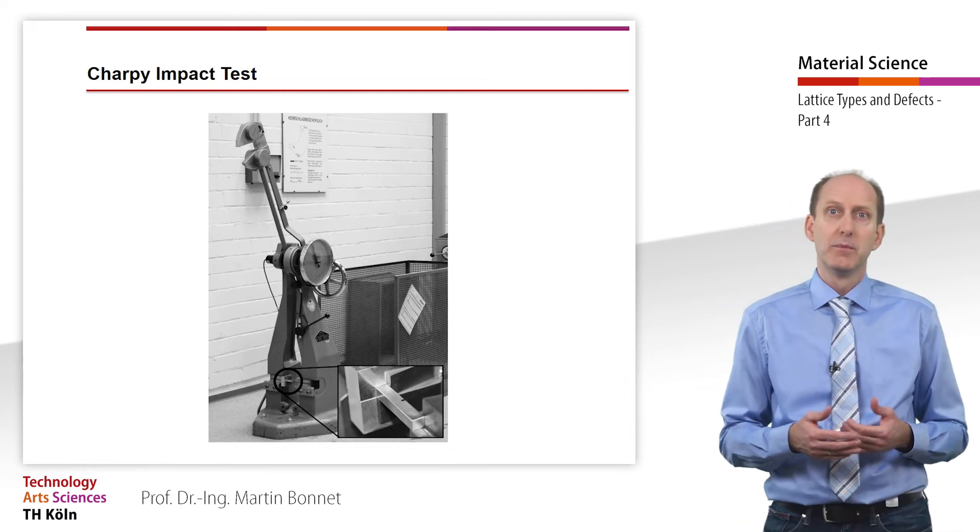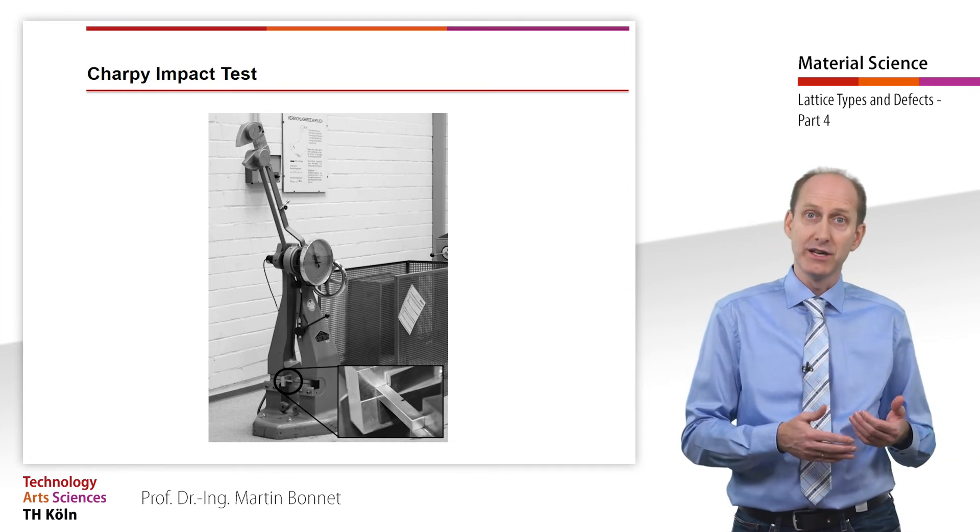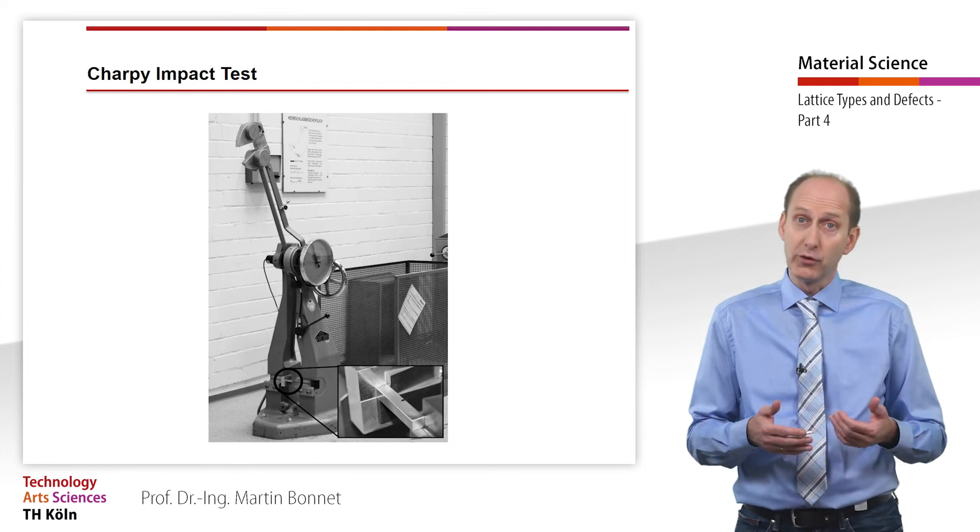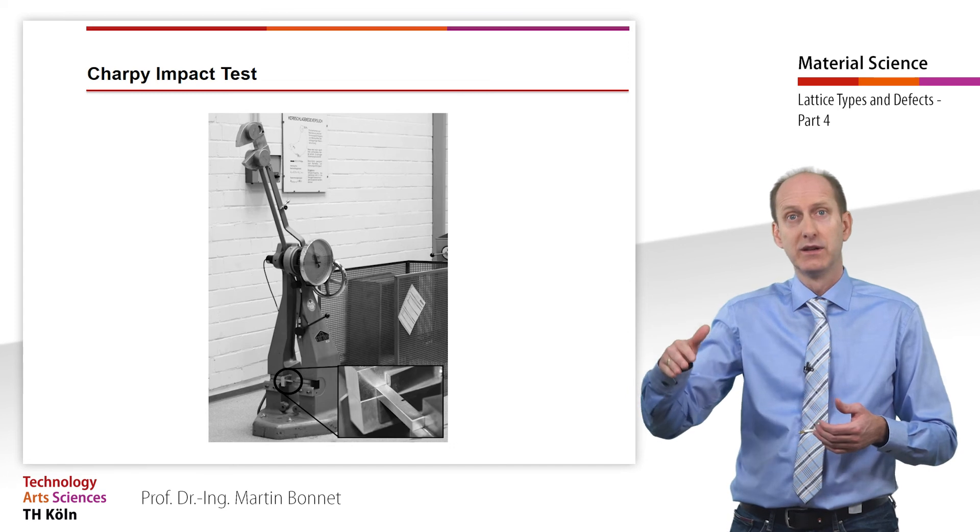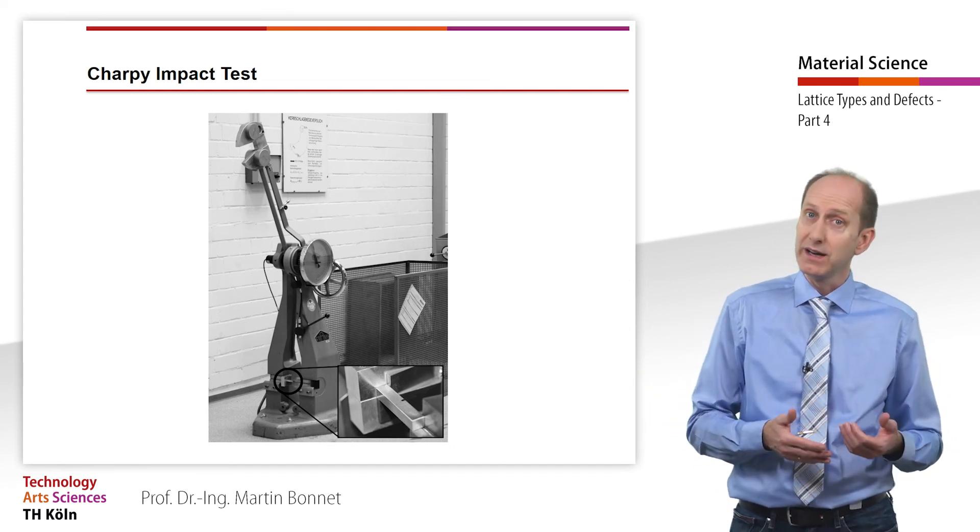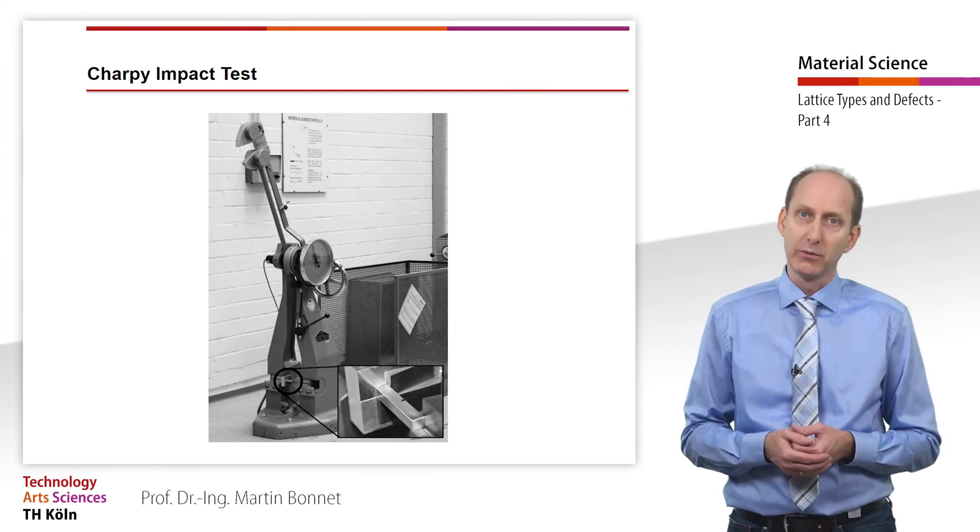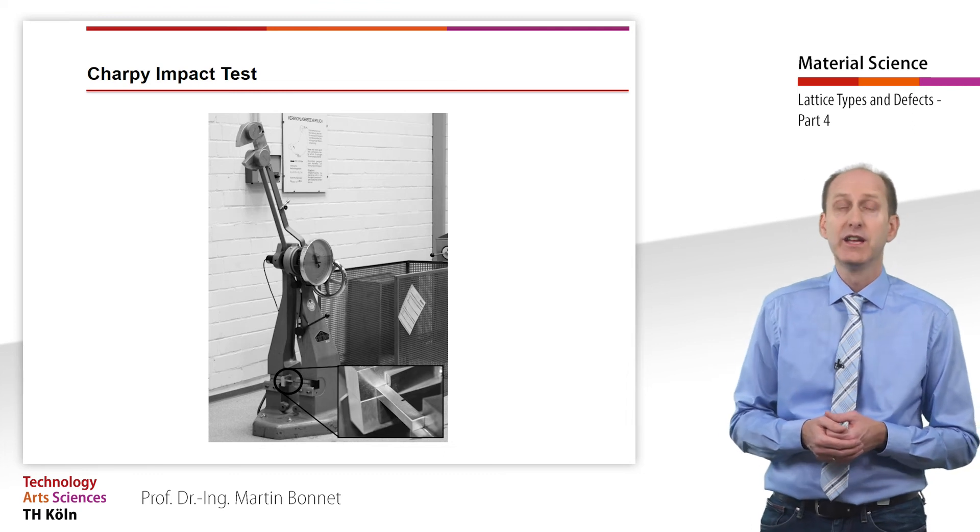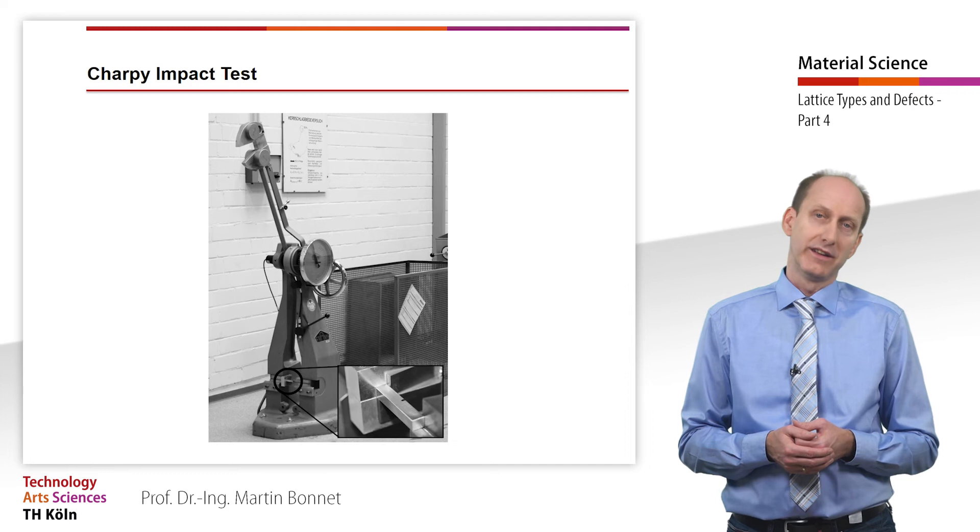If the pendulum punctures the specimen, a portion of its kinetic energy will be absorbed by the deformation process. Therefore, the pendulum doesn't swing that high on the other side. The difference between the initial and the final height of the pendulum determines the notch bar impact work of a specimen. The notch bar impact work is given in Joule and can be read from the scale on the testing device.